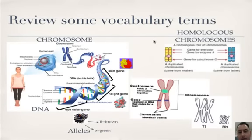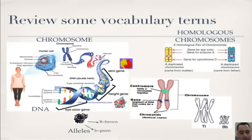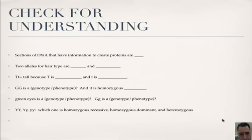Homologous chromosomes are the same size and shape. They have the same banding patterns and carry the same genes — one from mom and one from dad. You have homologous chromosomes in a diploid cell, not in a haploid cell, so only in body cells. A chromosome is made up of two chromatids. One DNA molecule goes through replication to make two identical molecules — those are two chromatids held together by a centromere. Genes are segments that code for a protein.